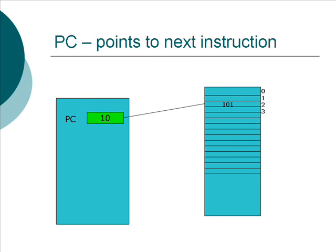Let's look at the program counter for a moment. The program counter, or PC, always points to the next instruction. In the diagram we can see the contents of the PC is 10 — binary 10, which equals decimal 2 — so it points to memory location number 2. Looking at memory, the contents of memory location 2 is 101. There's an implied leading zero because we're using a 4-bit computer with memory in nibbles, so that's actually 0101. That value may or may not be an actual instruction; if it is, the computer will execute it; if not, the program will produce an error.